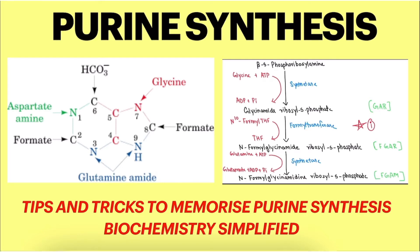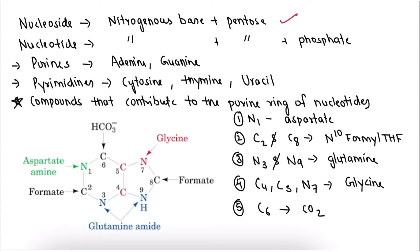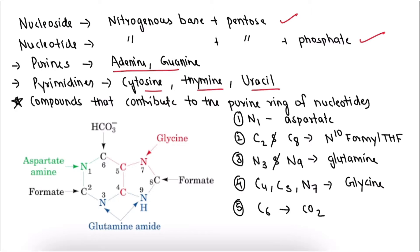Let's start with the basics. A nucleoside is nitrogenous base plus pentose. A nucleotide is nitrogenous base plus pentose plus phosphate. Purines include adenine and guanine. Pyrimidines include cytosine, thymine, and uracil. In this video, we are going to study about Purine Biosynthesis.